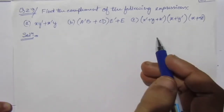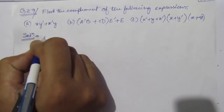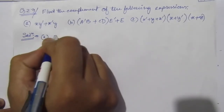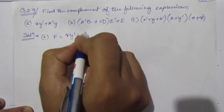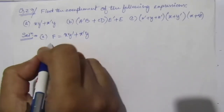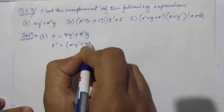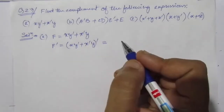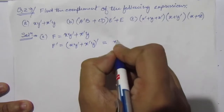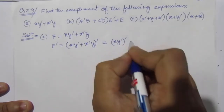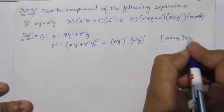We have to find the complement of these three expressions. For the first part of the problem, f equals xy̅ plus x̅y. So the complement is f̅ equal to the whole expression xy̅ plus x̅y, all complemented. Using De Morgan's theorem, we can write this as xy̅ whole bar, into x̅y whole bar.